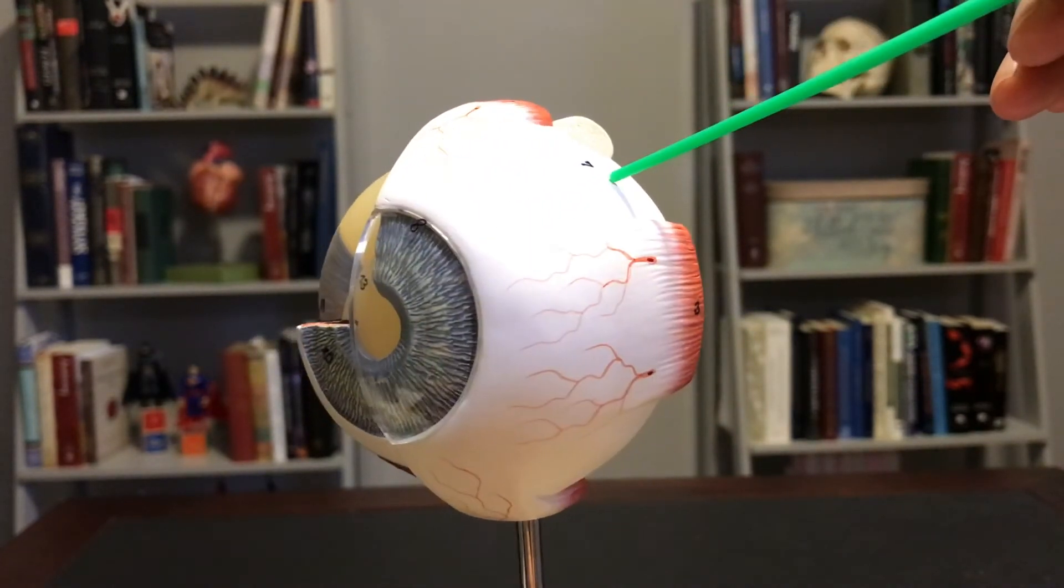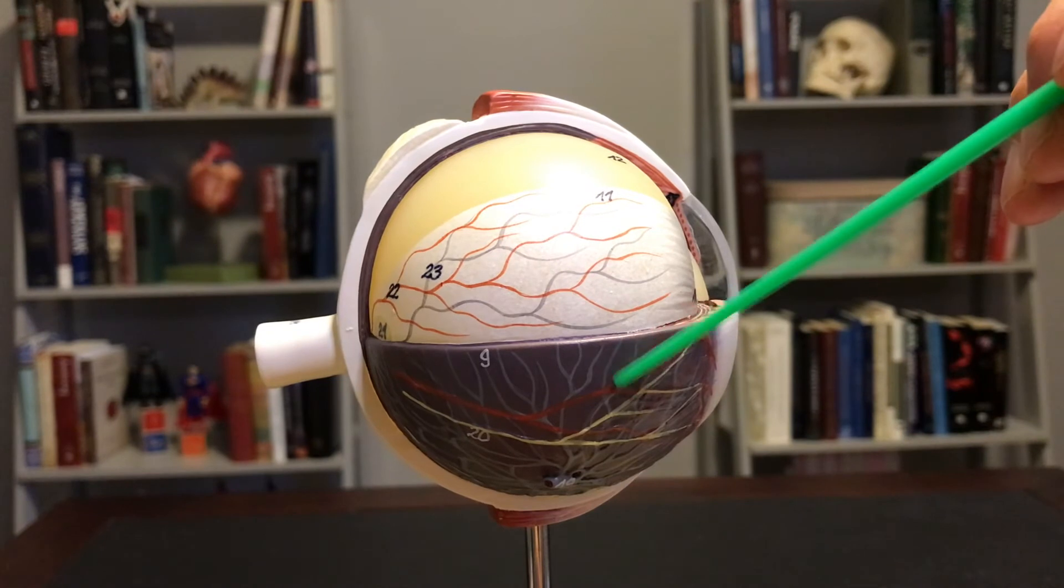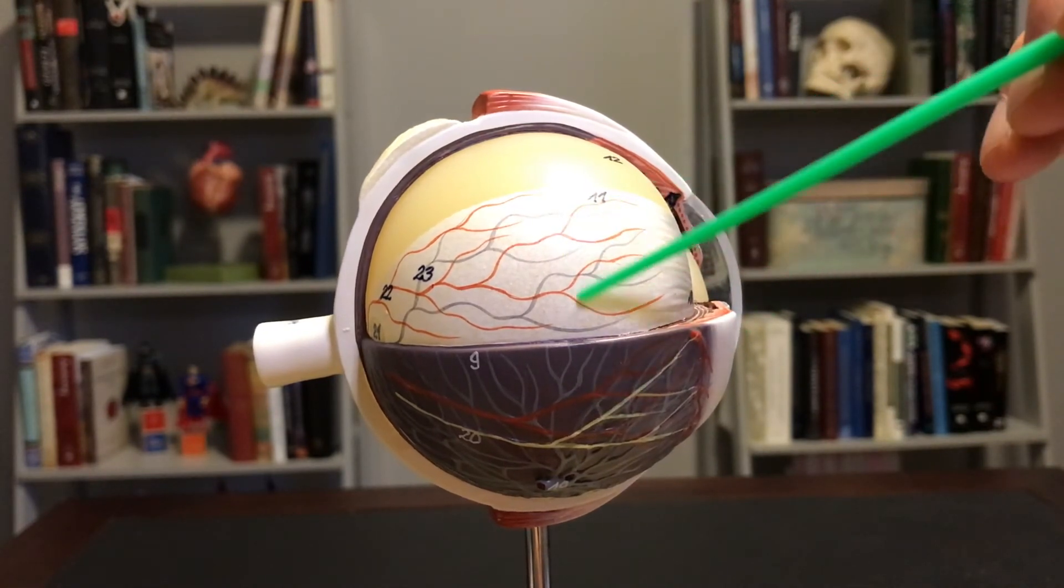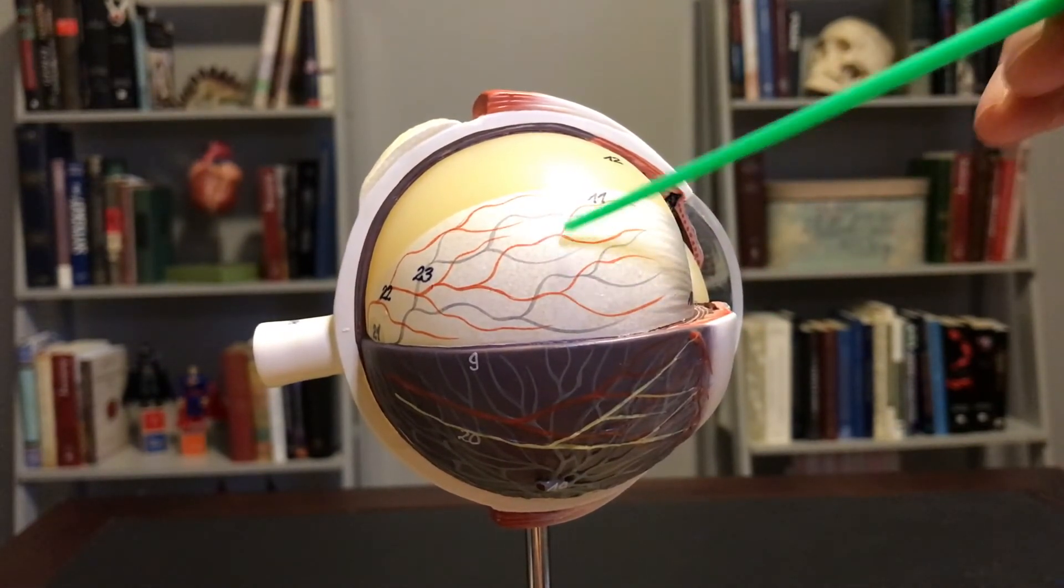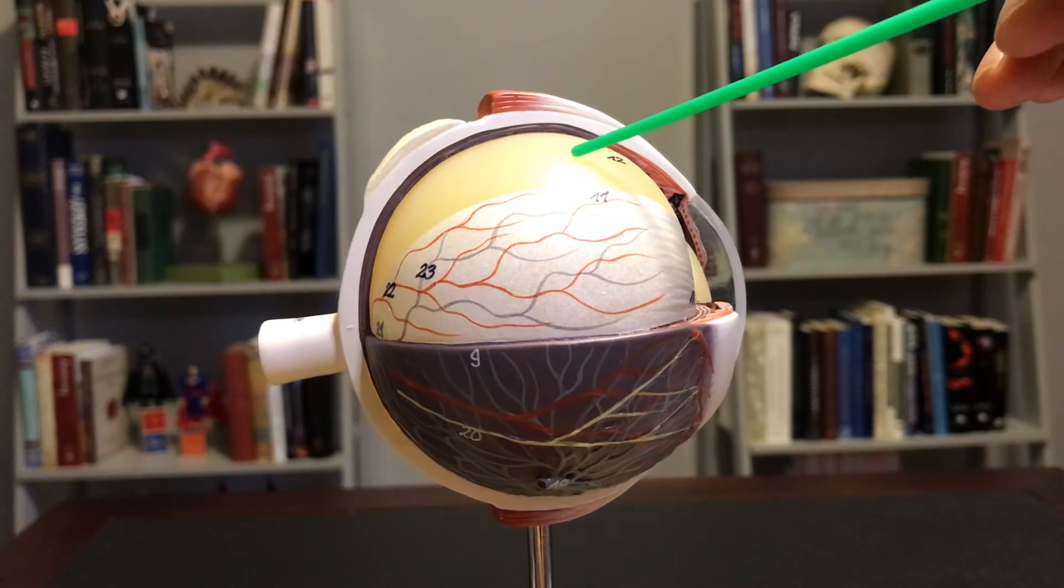So sclera, outer layer, choroid, middle layer, retina, the inside layer. And then, of course, deep to the retina is going to be the vitreous humor.